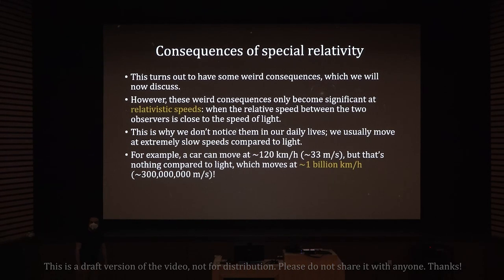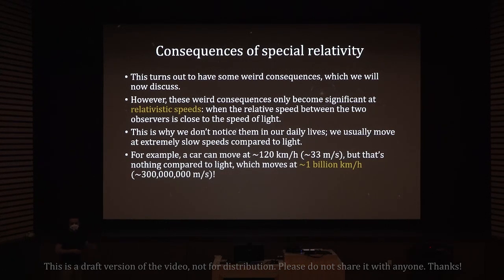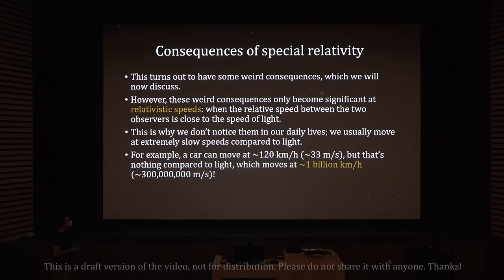Two observers are moving at some relative speed, and they both see the same space-time — just like all the students are seeing the same desk — but this space-time has a space direction and a time direction, just like the desk has width and depth. Different observers will see the directions of time and space differently, even though they're seeing the same space-time. These weird consequences only become significant at relativistic speeds, when the relative speed is close to the speed of light.